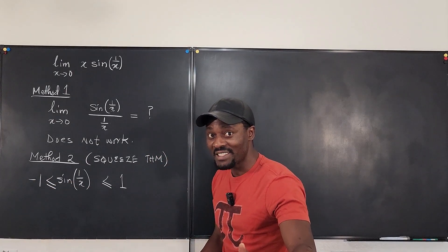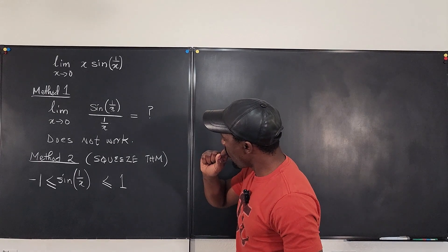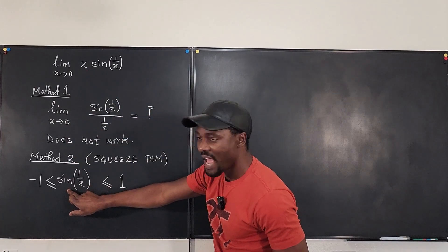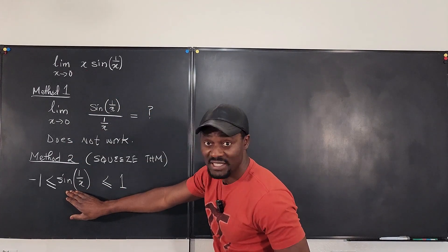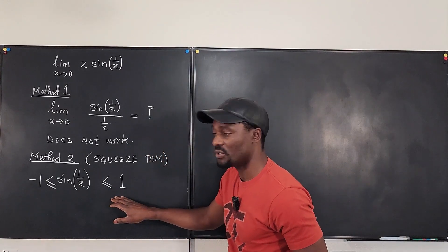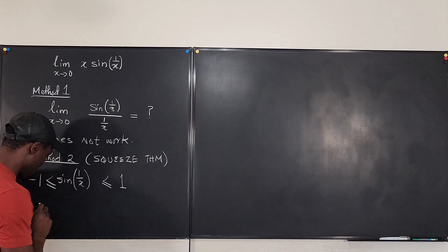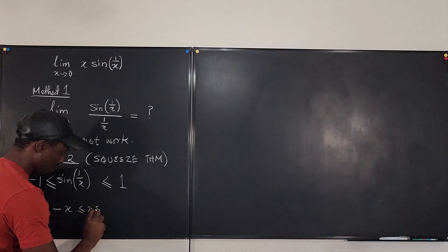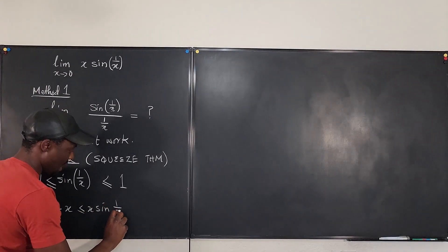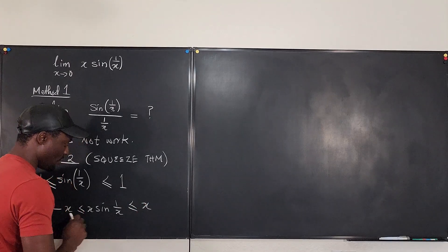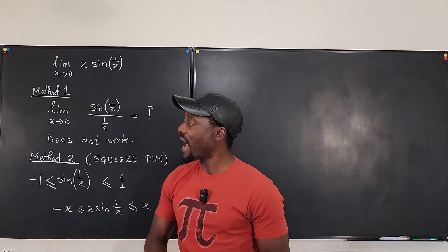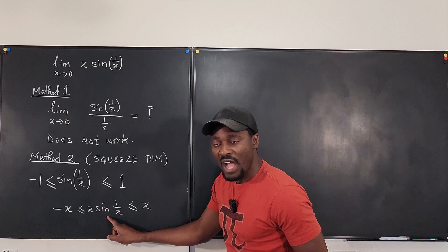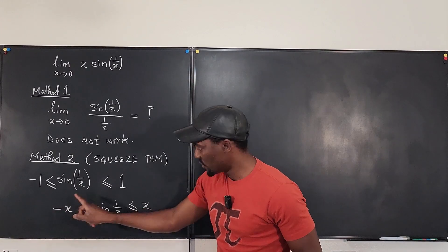So I can say that sine of 1 over x is always less than or equal to one, and always greater than or equal to negative one. Now I multiply through by x, giving: negative x is less than or equal to x sine of 1 over x, which is less than or equal to x. Now I take the limit of all three parts as x goes to zero.